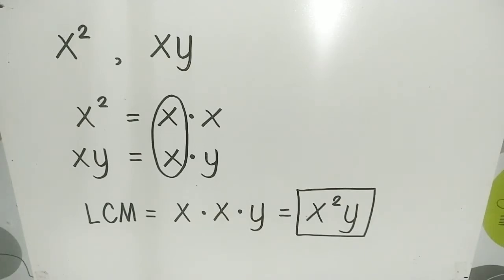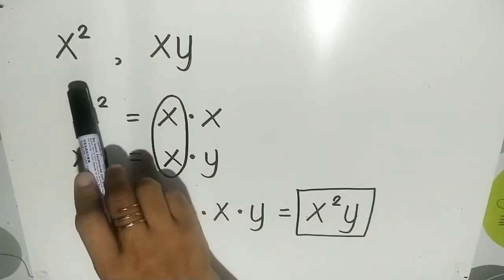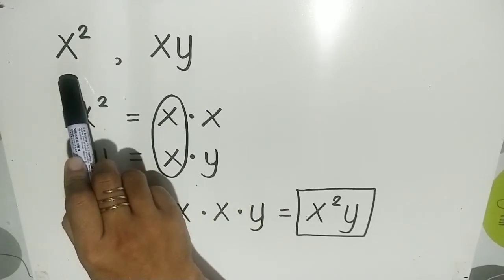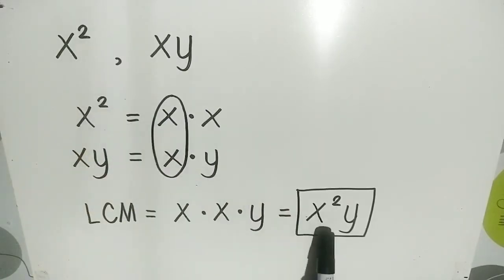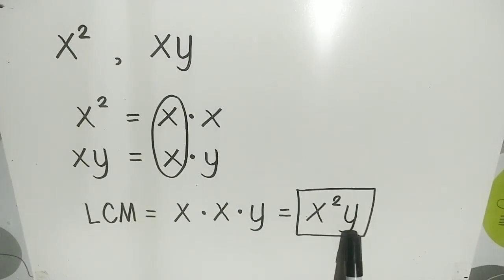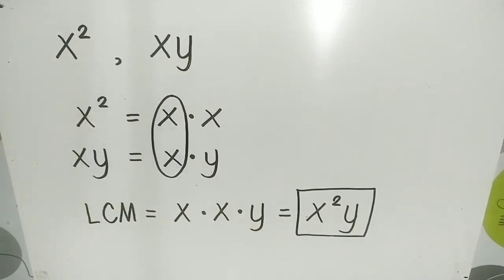This is the LCM of these two monomials: x squared y. In a shorter way, if you are going to find the LCM of two monomials with 1 as numerical coefficient, you just copy the variable with the highest exponent. In x, we have x squared because the highest exponent is 2. In y, we have y. So, x squared y is the LCM.